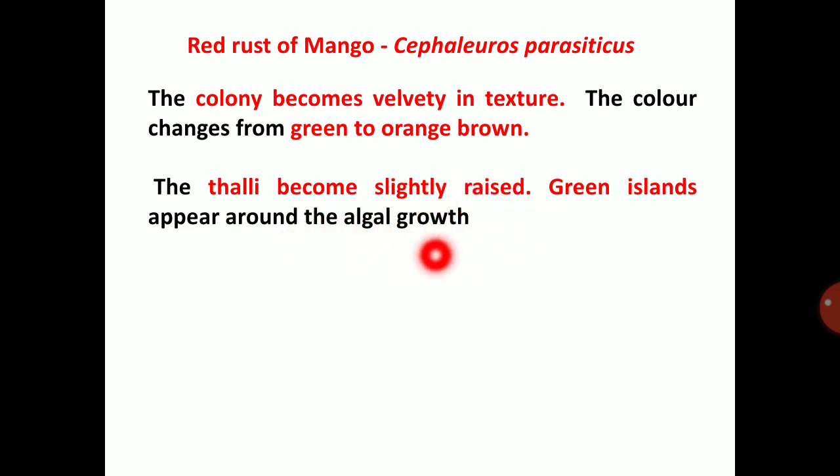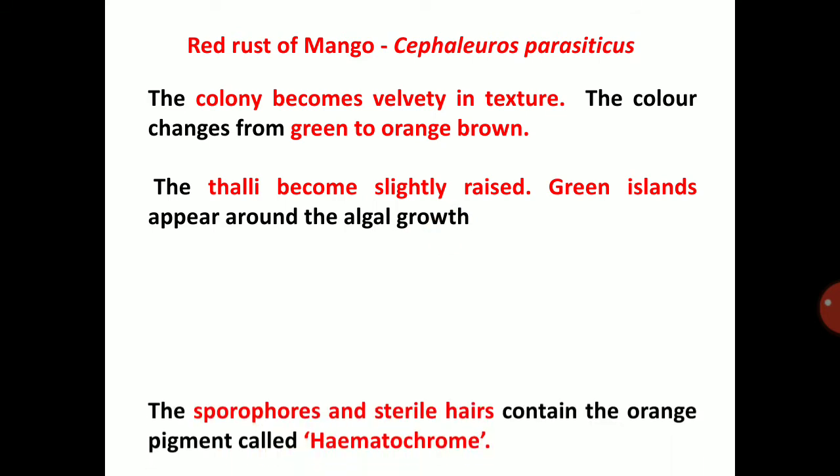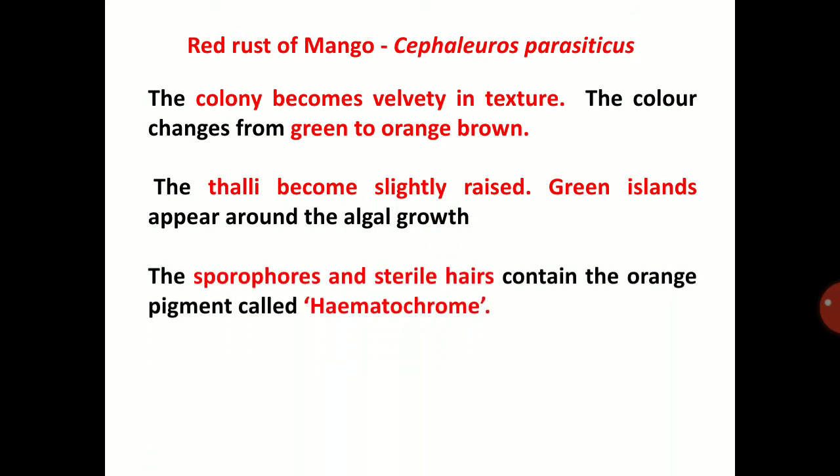The sporangiophores and sterile hairs contain the orange pigment called haematochrome.